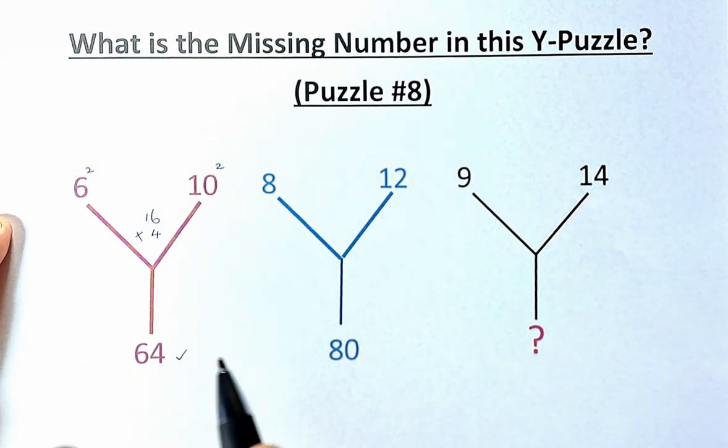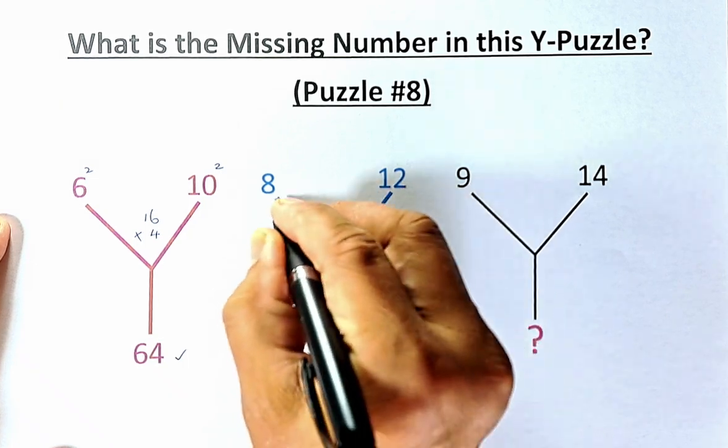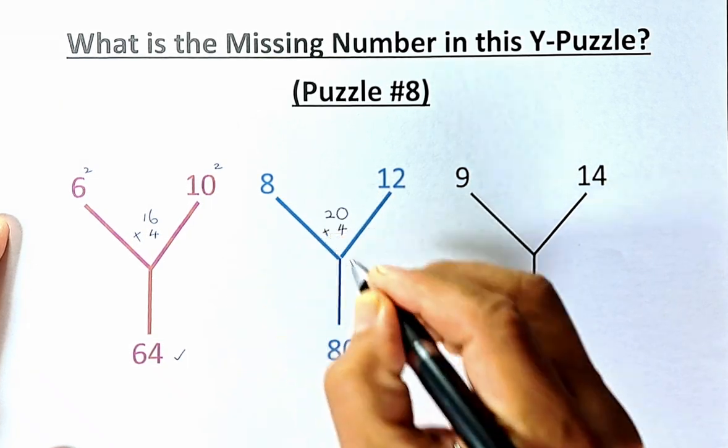The second Y, we have 8, 12 and 80. We're going to add them up. 8 plus 12 is 20. 12 minus 8 is 4. You multiply them. 20 times 4, that will give us 80.